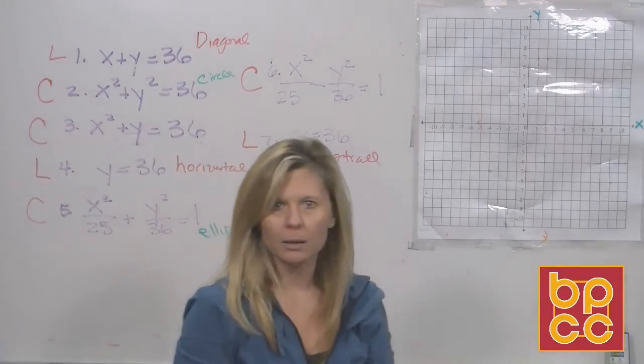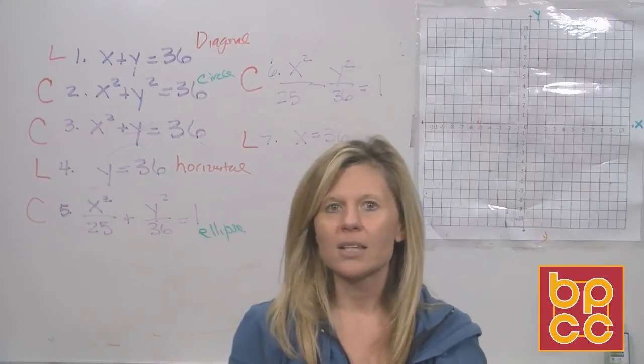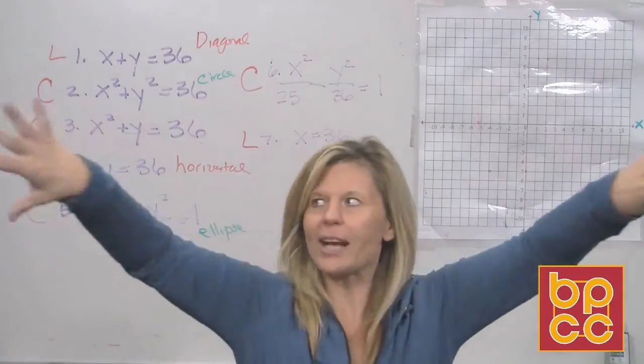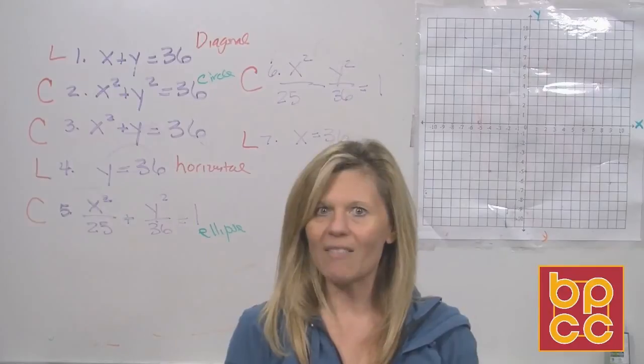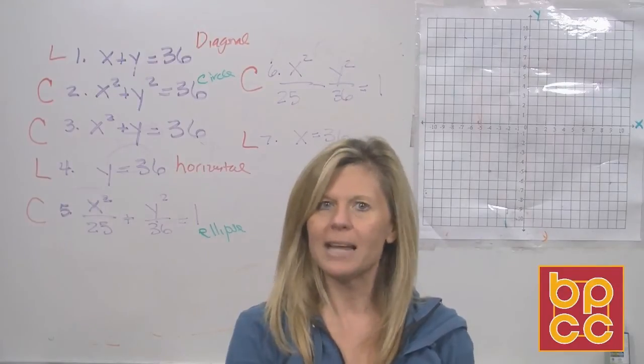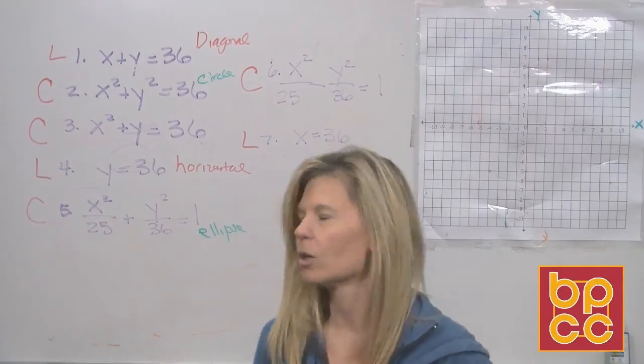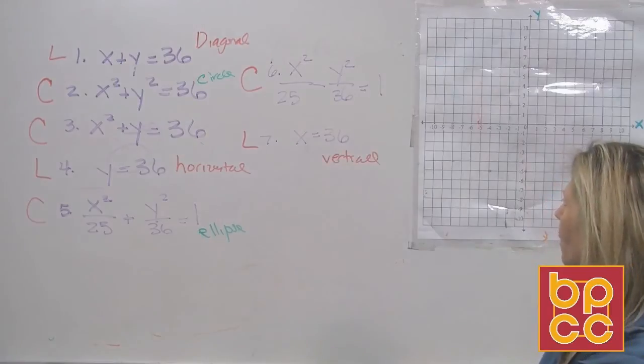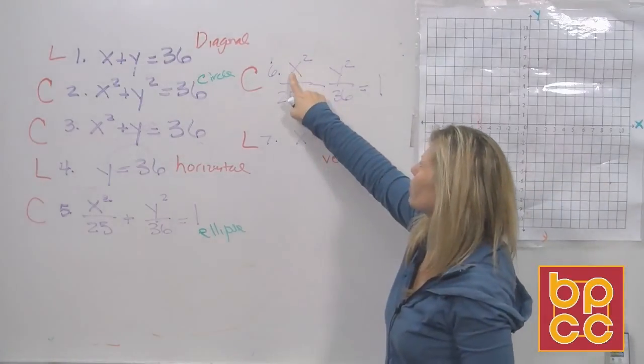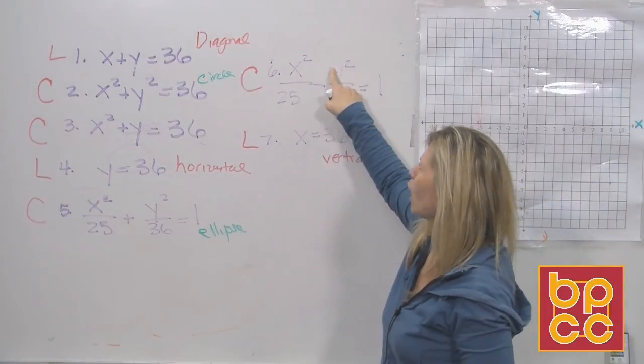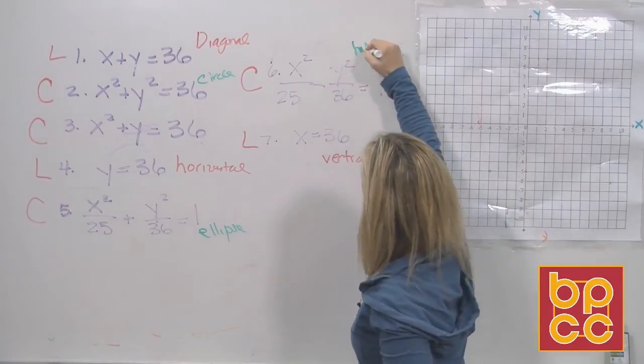We said a hyperbola is the opposite. Instead of the two curves coming together, they go apart. So, you'll still have an X squared and Y squared, but now be connected by subtraction. Which is my equation of my hyperbola? Right here. There's the X squared and the Y squared. Two curves. The minus means they're going apart.